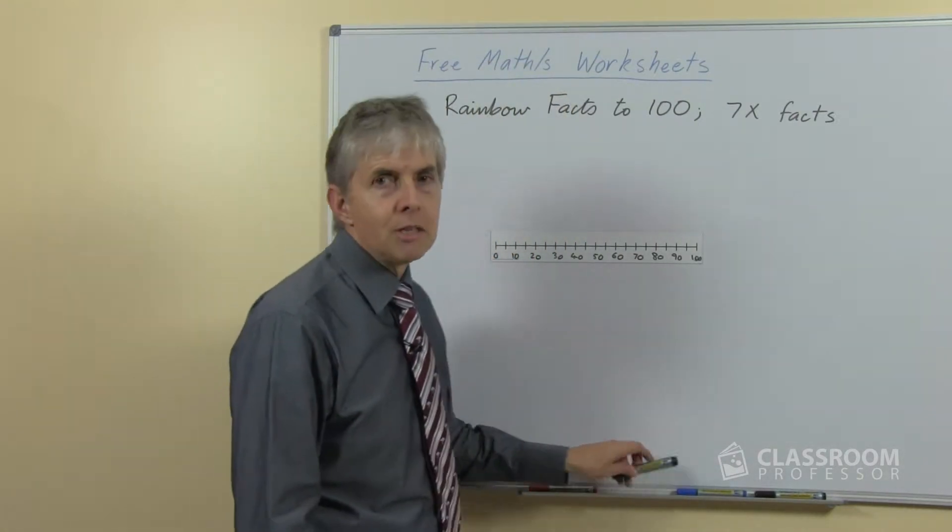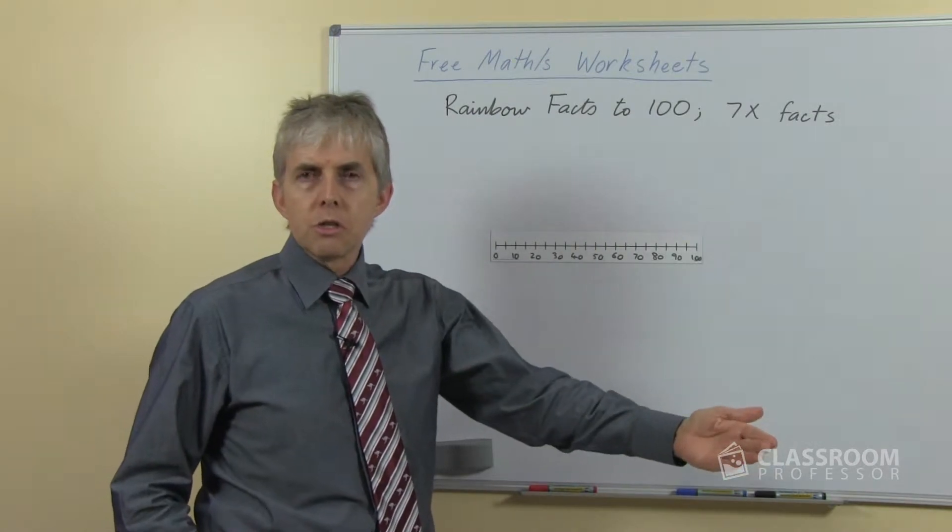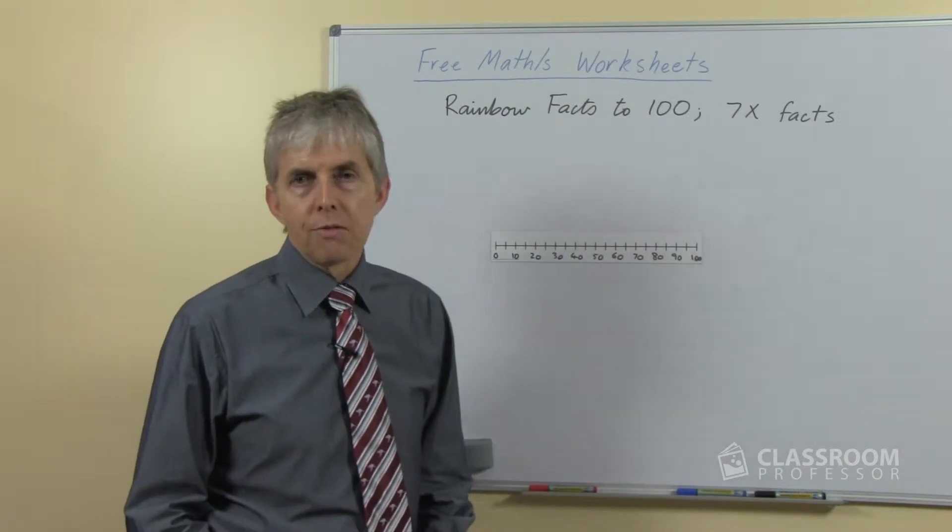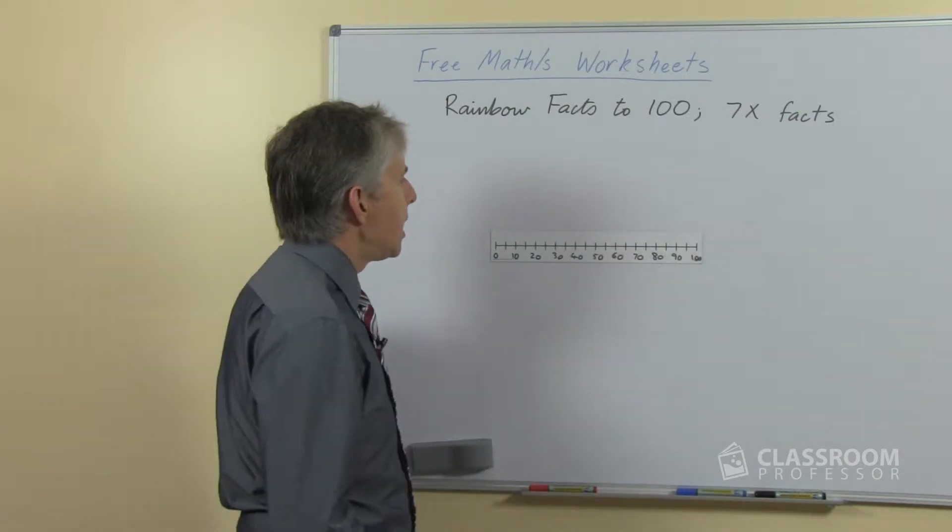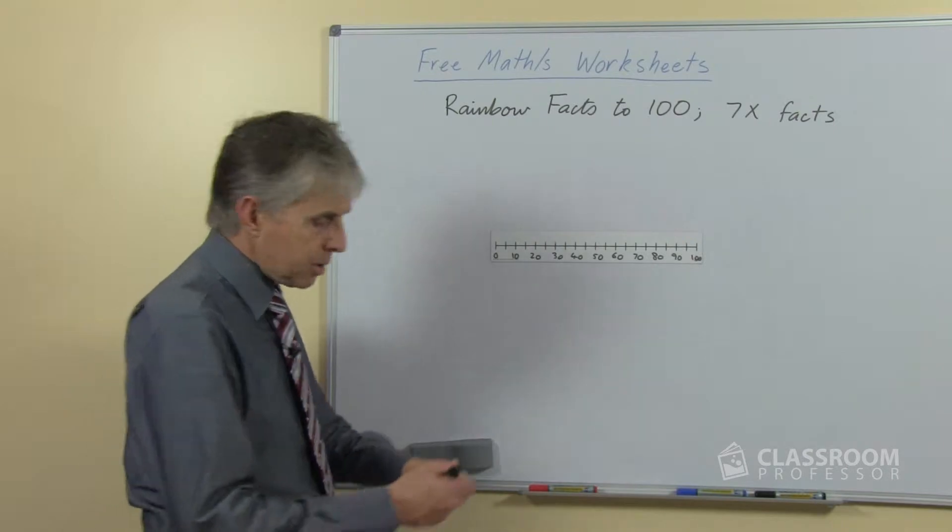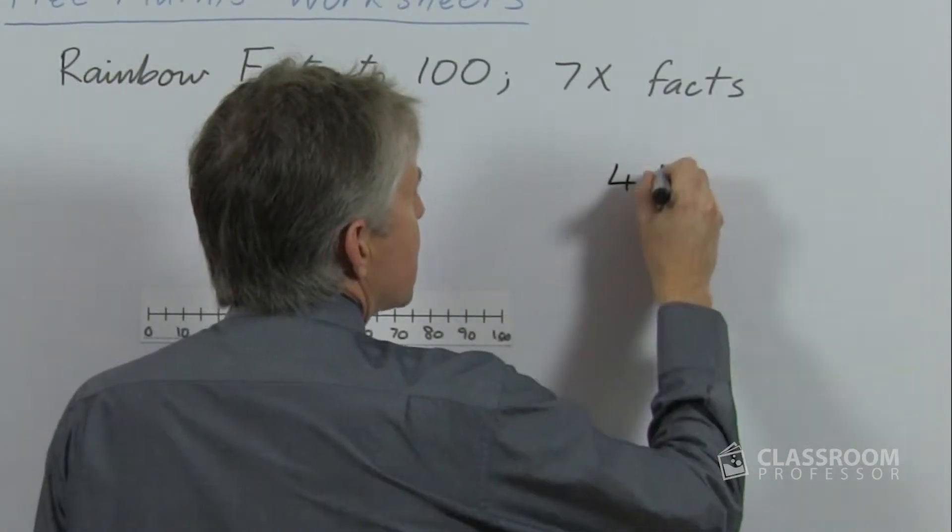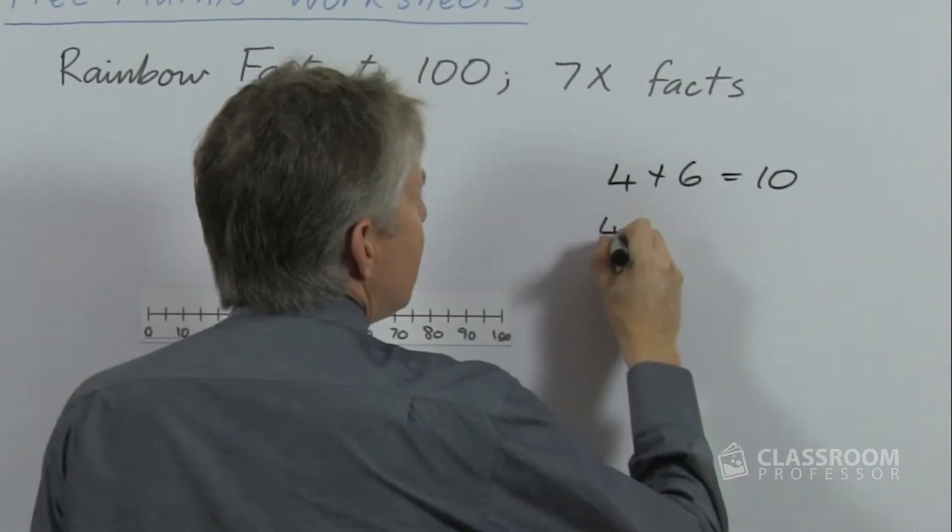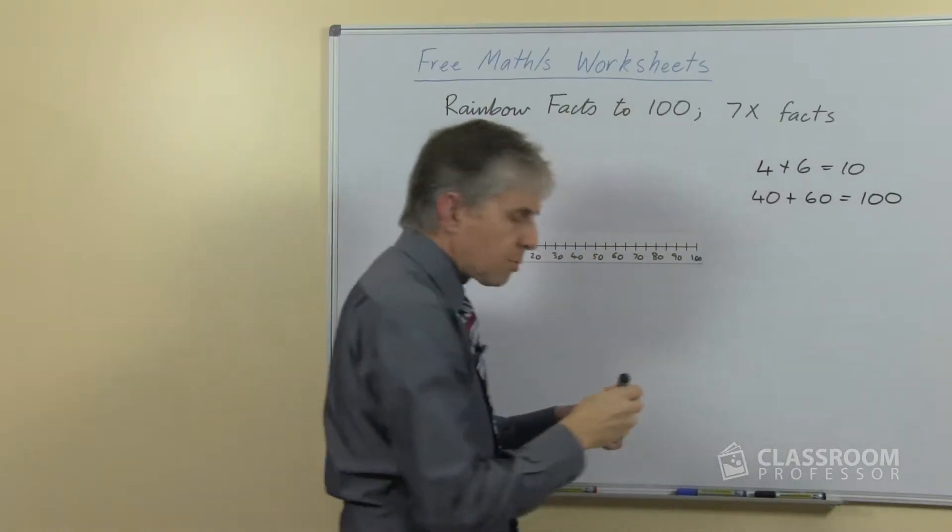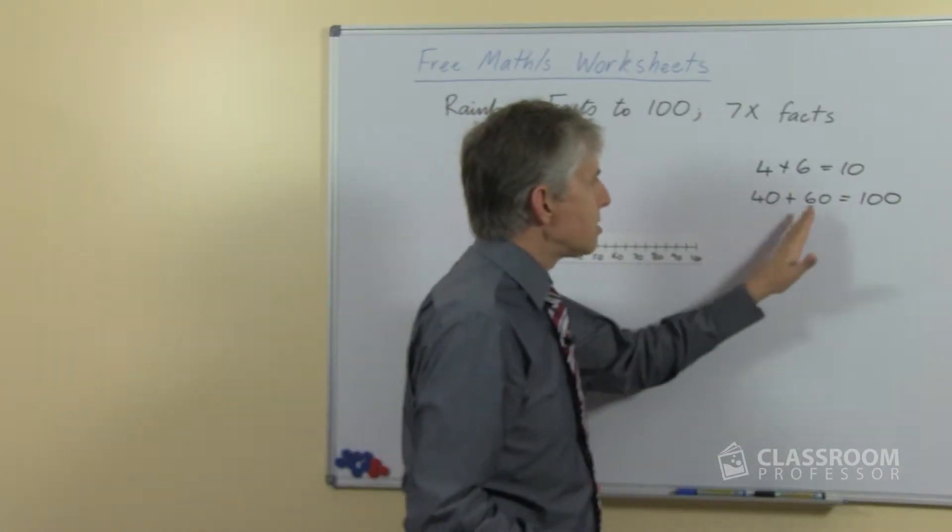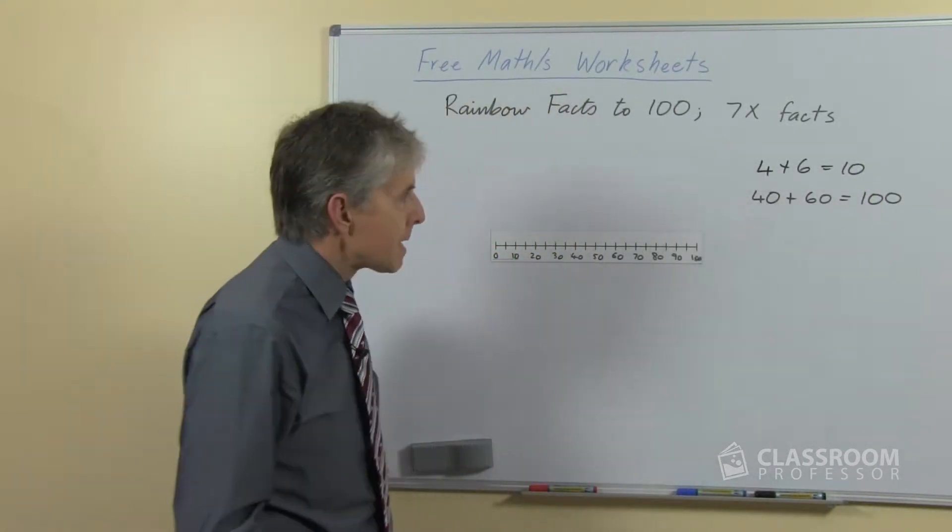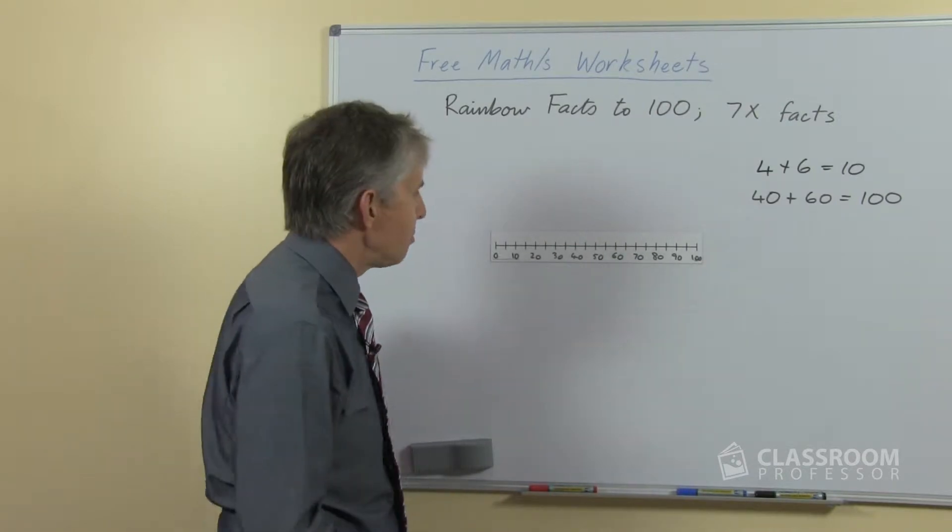So rainbow facts to a hundred really extends the students' knowledge of the simpler basic rainbow facts up to ten, and it does it in a couple of different ways. The first one is a pretty easy one and that's looking at multiples of ten. So just as the students know, for example, that four plus six equals ten, they should be able to extend that knowledge once they're familiar with the multiples of ten and the number one hundred, that four tens and six tens is ten tens or a hundred, and so that's a number fact that they should pretty easily be familiar with.